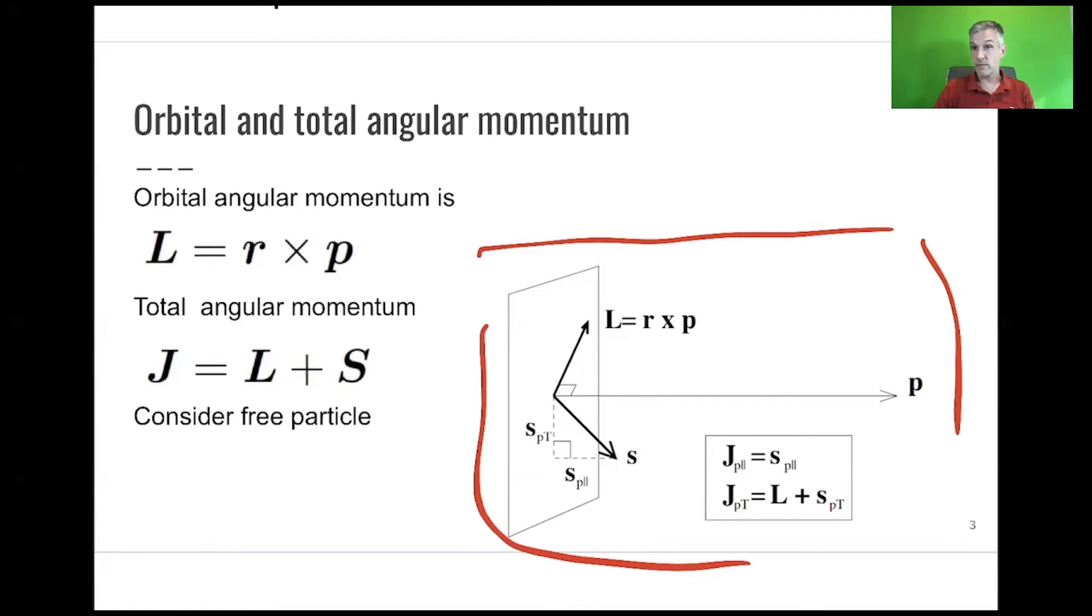This is a nice choice of coordinate system or axis, namely the choice of the momentum of the particle. You find that the total momentum perpendicular is the spin of the particle perpendicular, and the transverse component is the orbital angular momentum and the spin of the particle in the transverse direction.